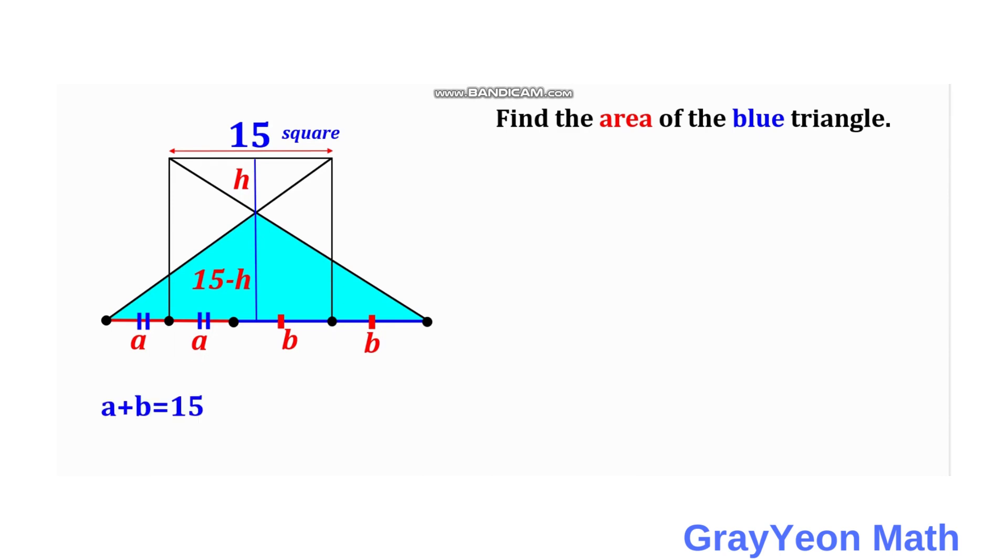So next thing is we notice that these two angles are actually congruent because they are actually vertical angles. This is theta and this should be also theta. And if we divide this angle, it becomes theta over 2.